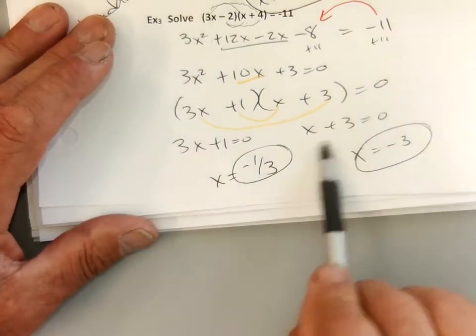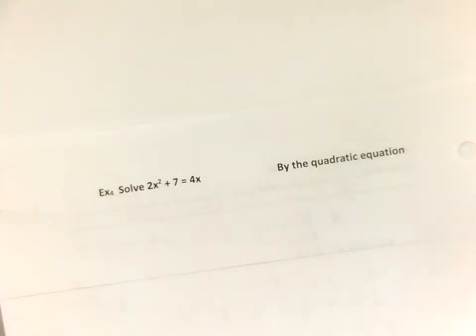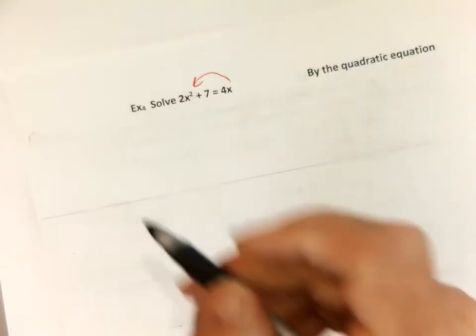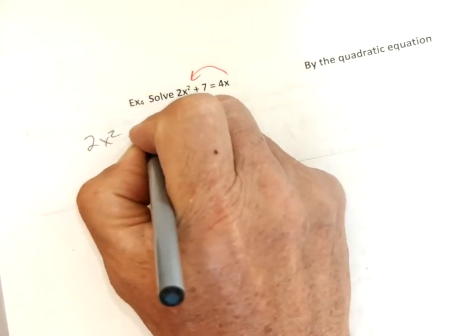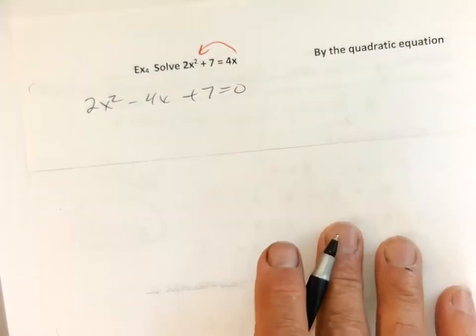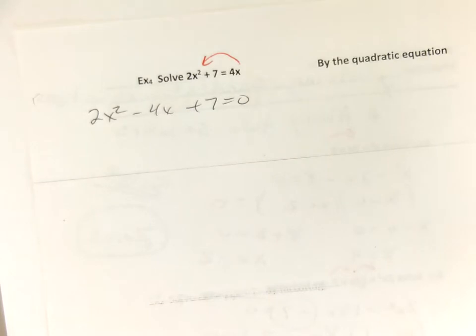I'll put this one up, because the first part of this is pretty easy. So if it won't factor. So let's check this one out. I bring over the 4x, and we've got 2x squared minus 4x plus 7 equals 0. And if it won't factor, because it won't, you can try it.